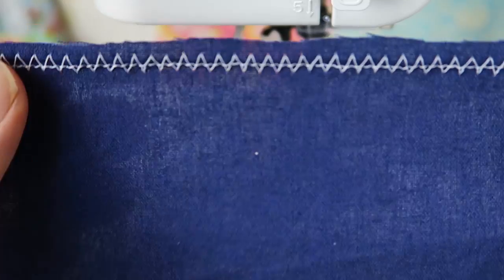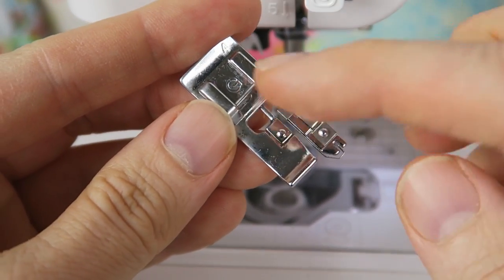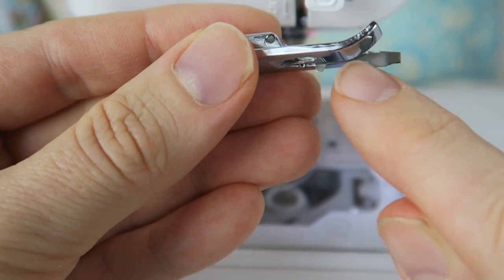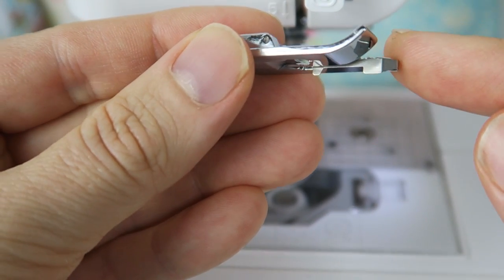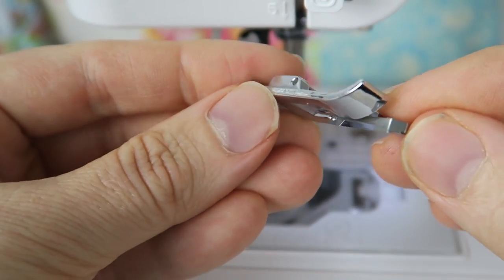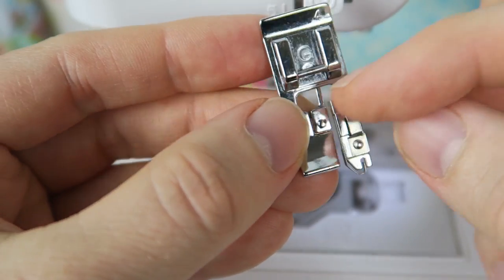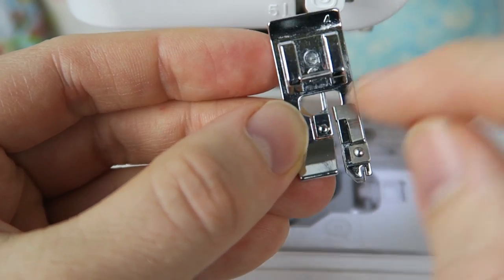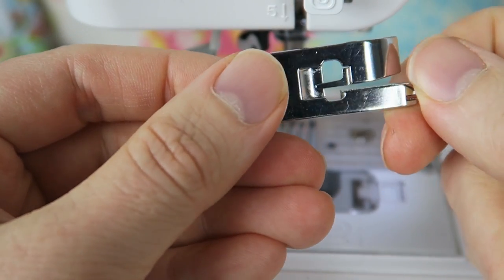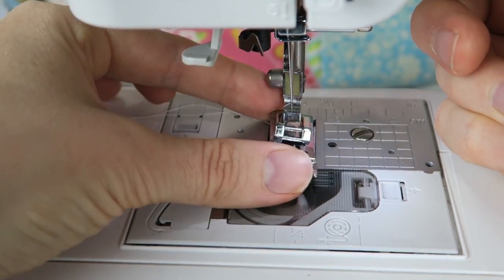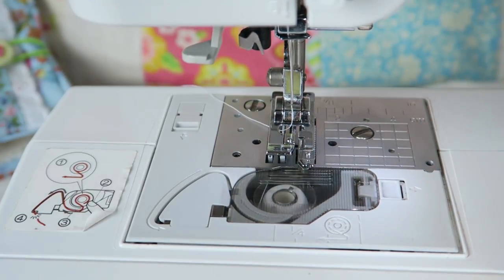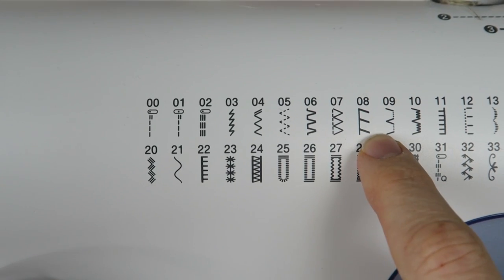Another option is to use your overcasting foot on your sewing machine. The overcasting foot has this little ridge here which guides the fabric so you can sew along the raw edge of the fabric. The raw edge will sit at this little guide, and then you have this little ridge in the middle here which makes the stitches a little bit longer, so it'll make sure that more of the thread will be guided through the foot and it'll make a nice overcasting stitch.